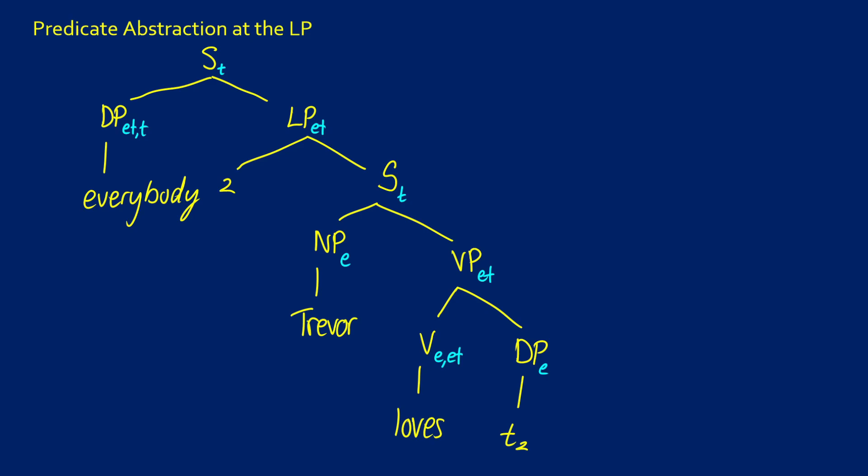In this final structure, let's look at what the nodes would be. Going through the tree, everyone loves T2, so Trevor loves T2. Our DP is just going to be X2 since we're going to assign all of our traces a variable.